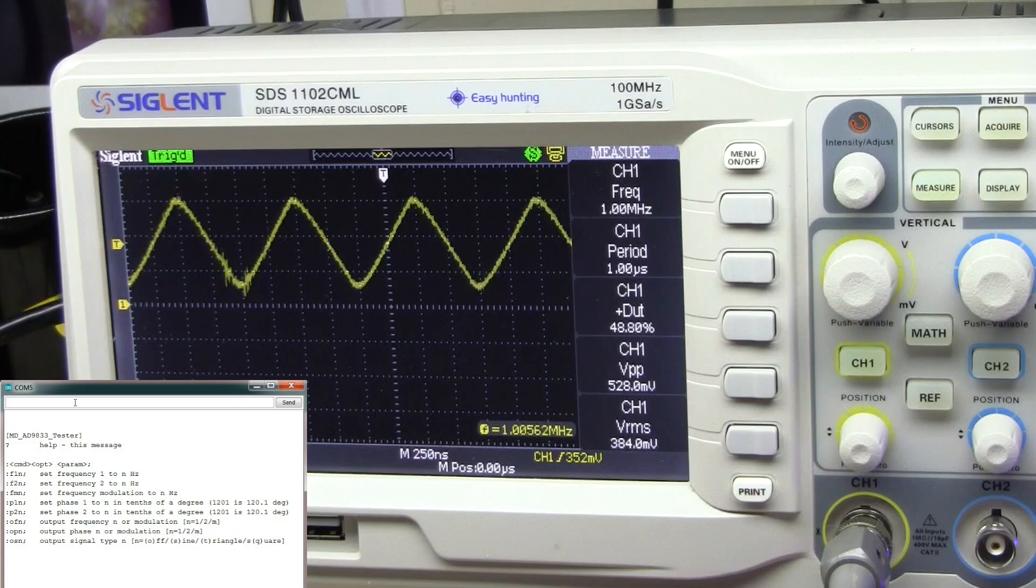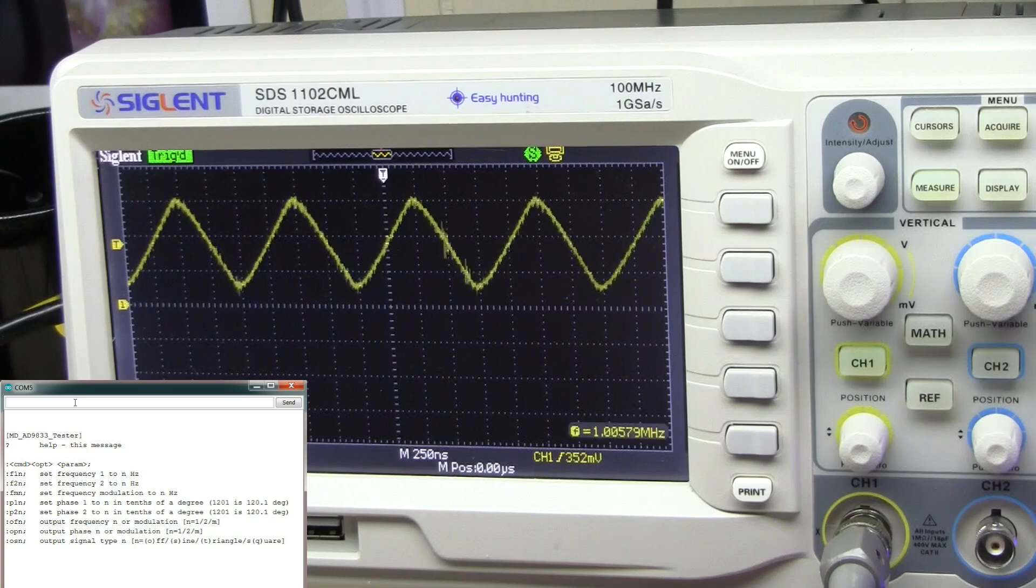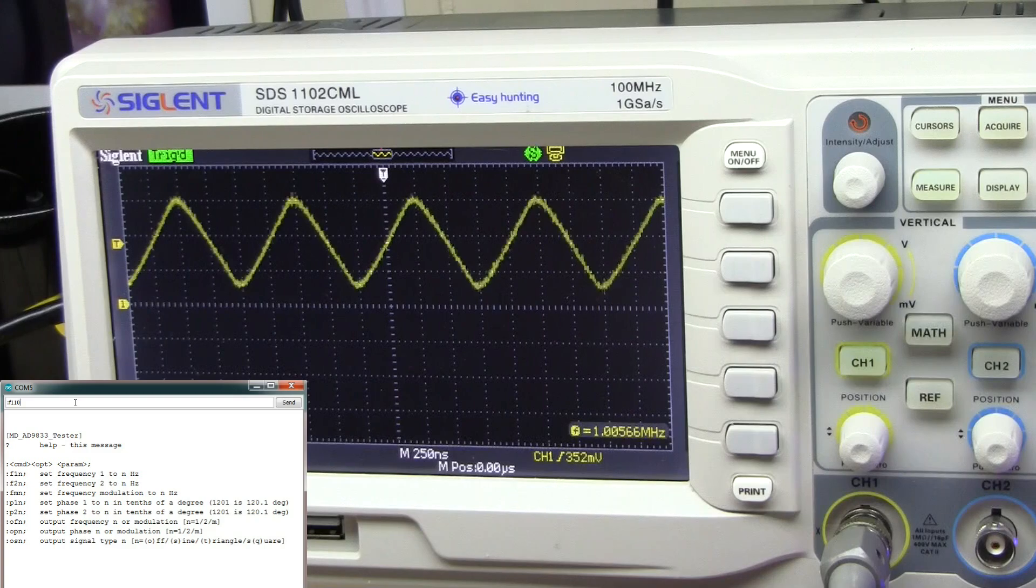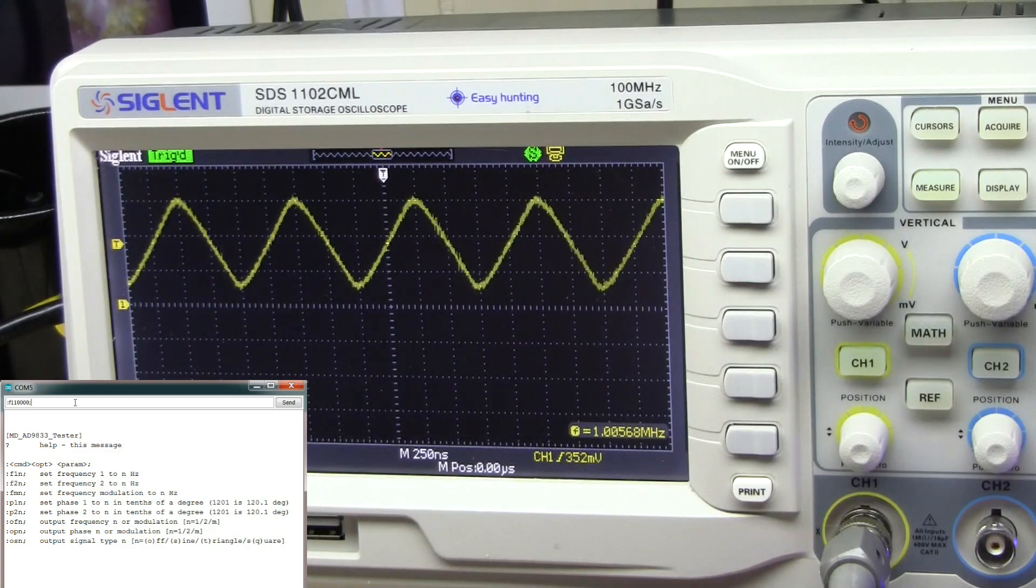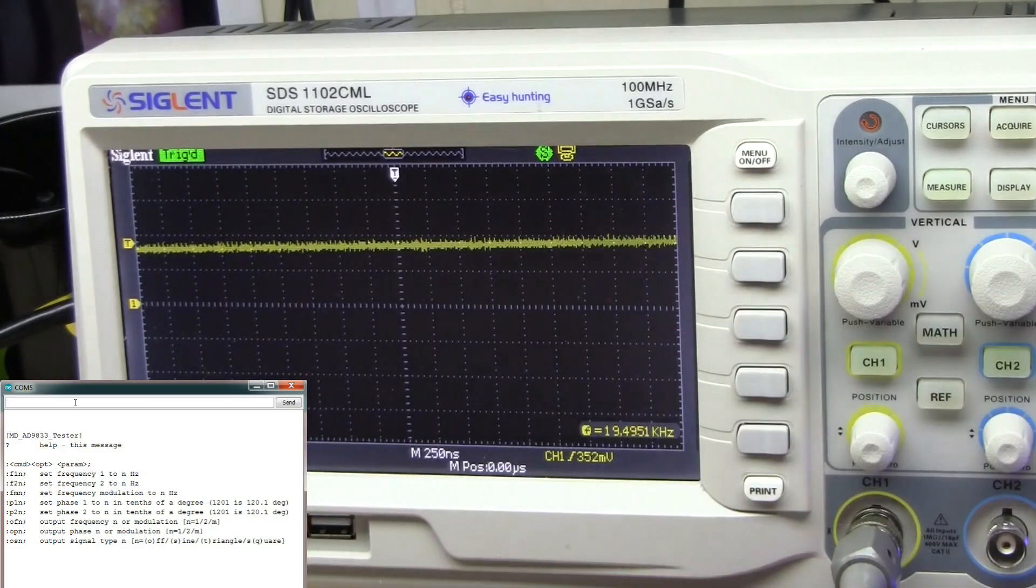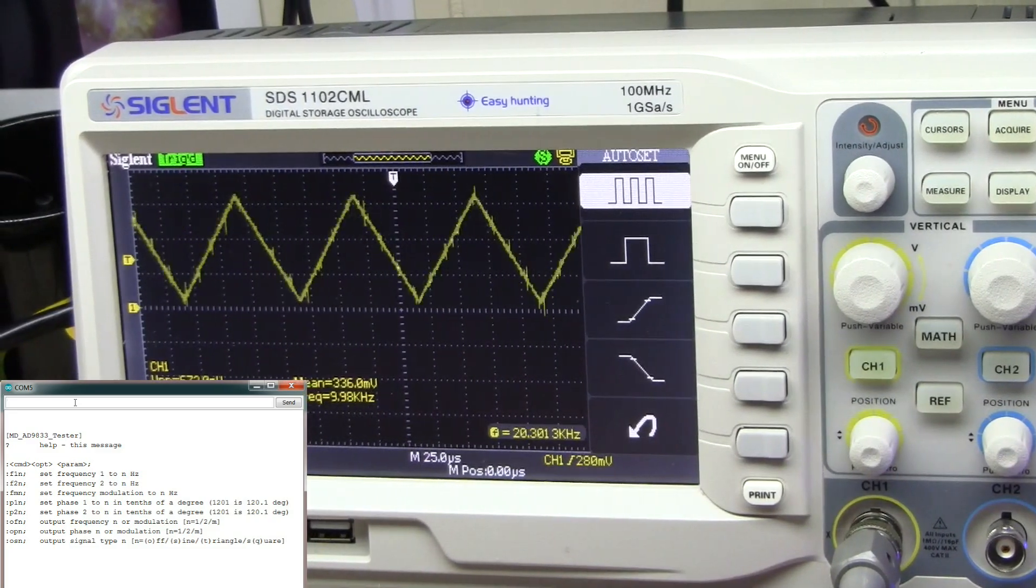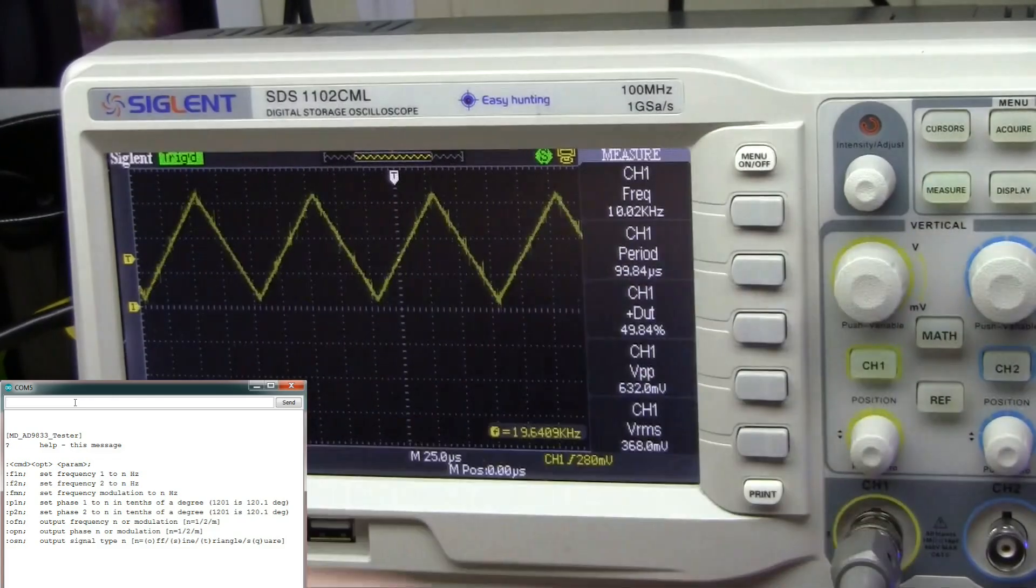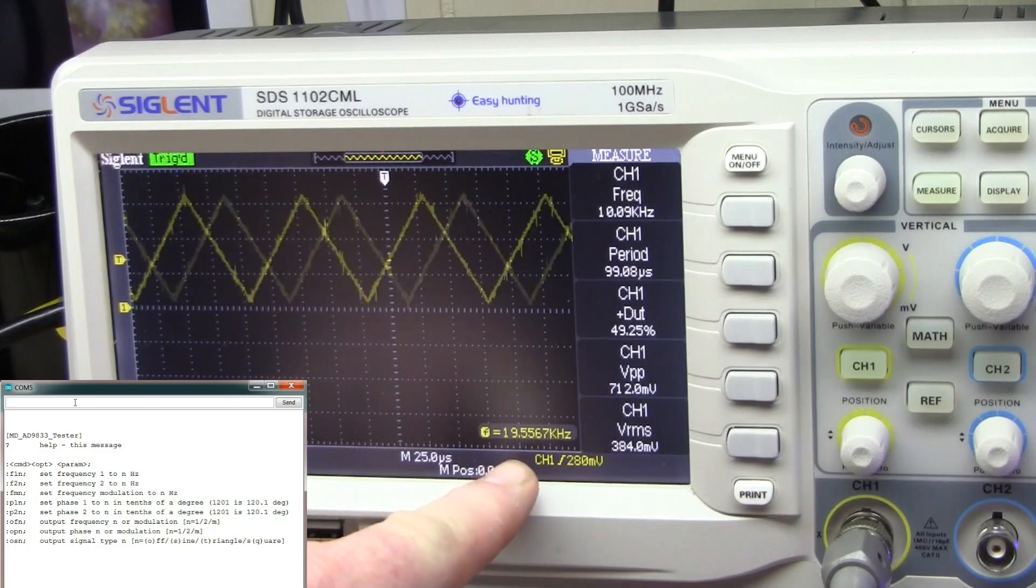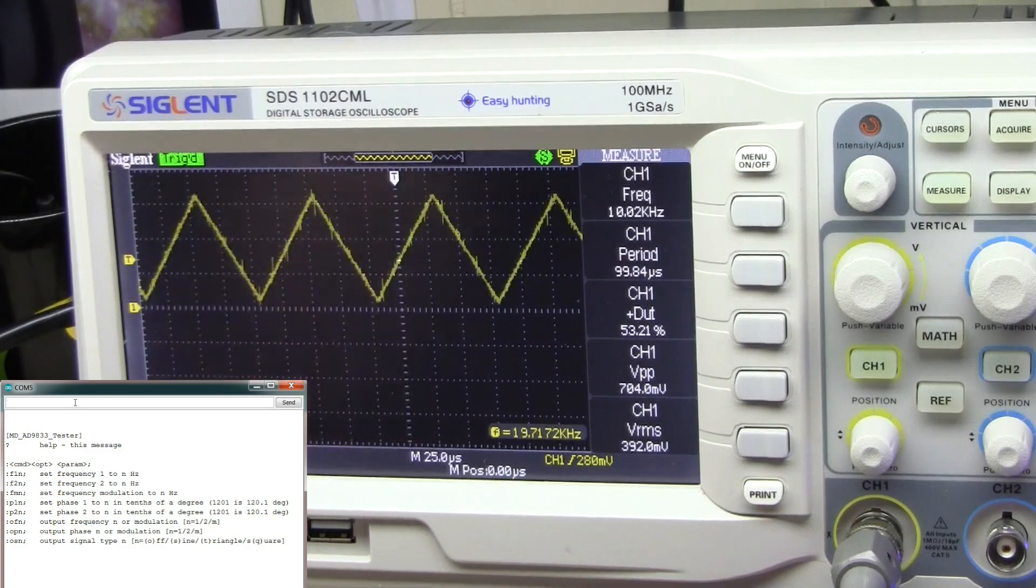Alright, now I'm going to change the frequency to 10 kilohertz. And we'll auto set once again. Now I put in 10 kilohertz. You can see we're getting close to it. Down here it doesn't quite know what to make of it. It's saying 1918 kilohertz and we're getting jumpy.